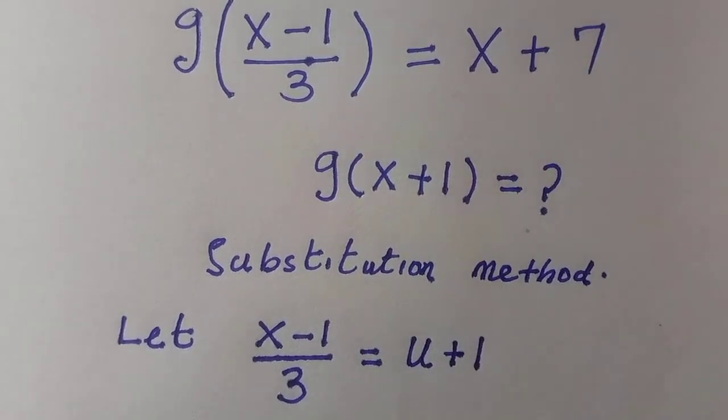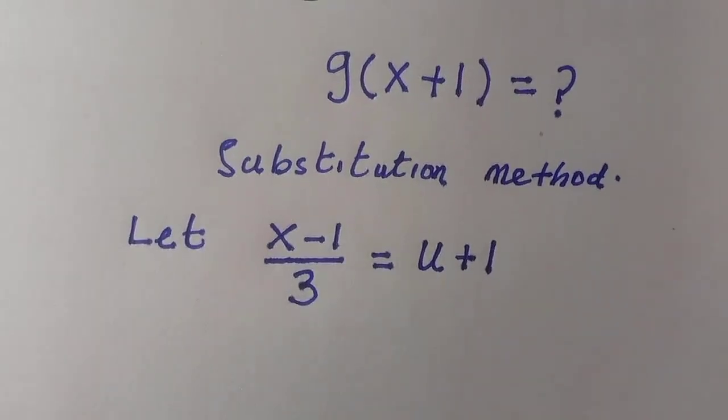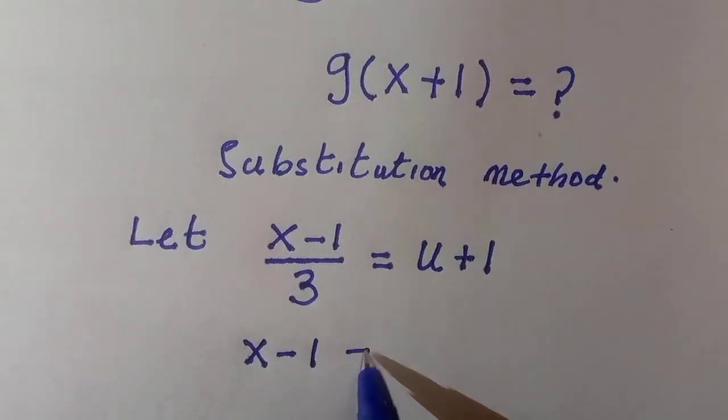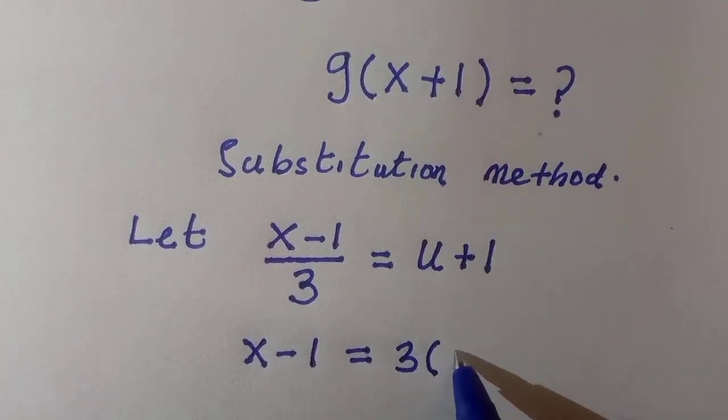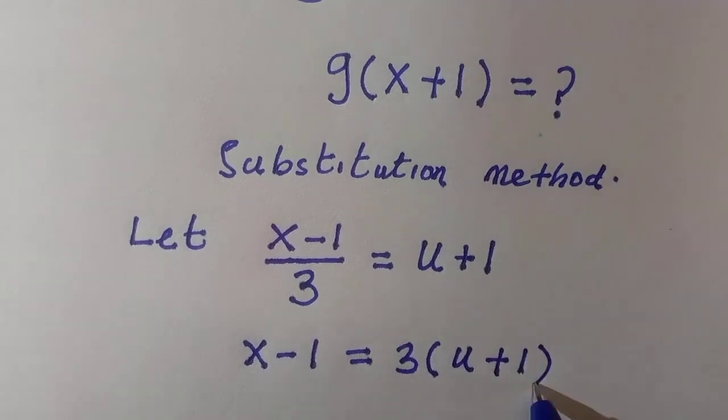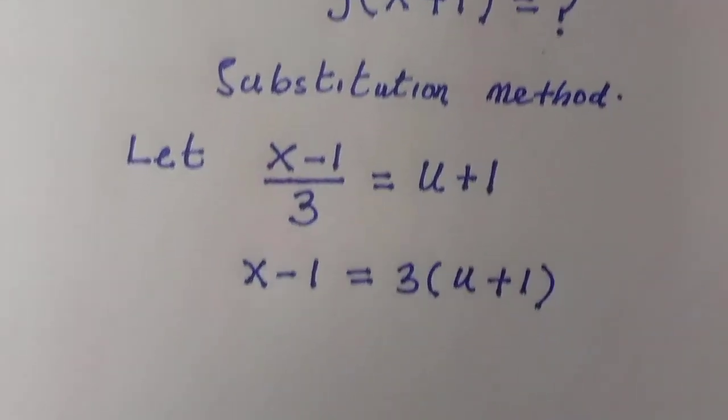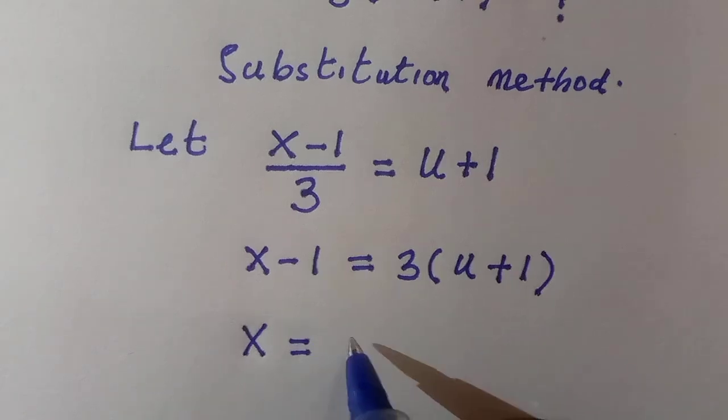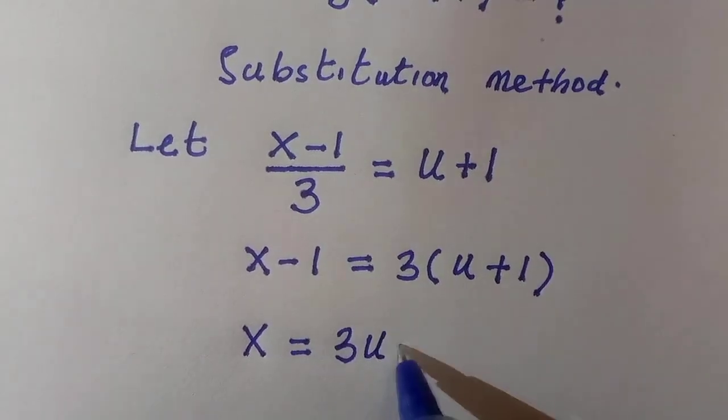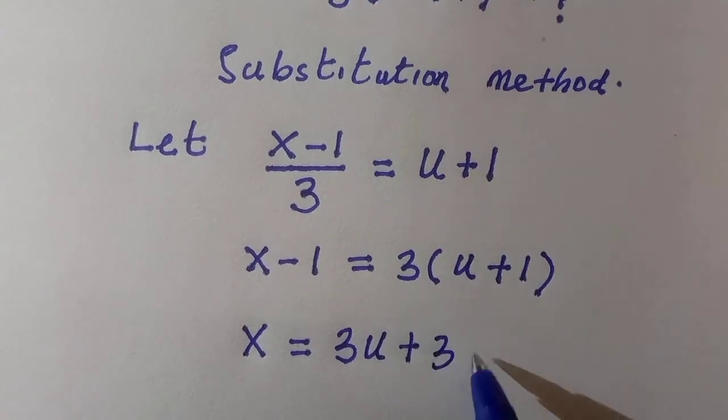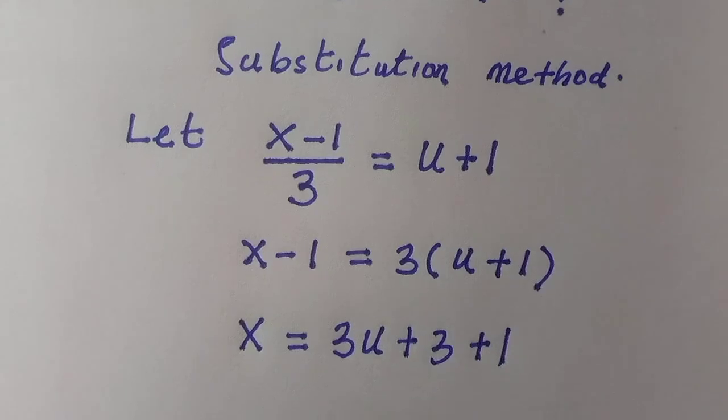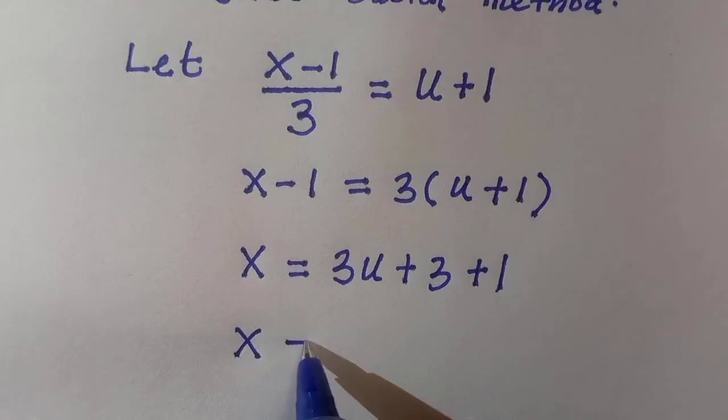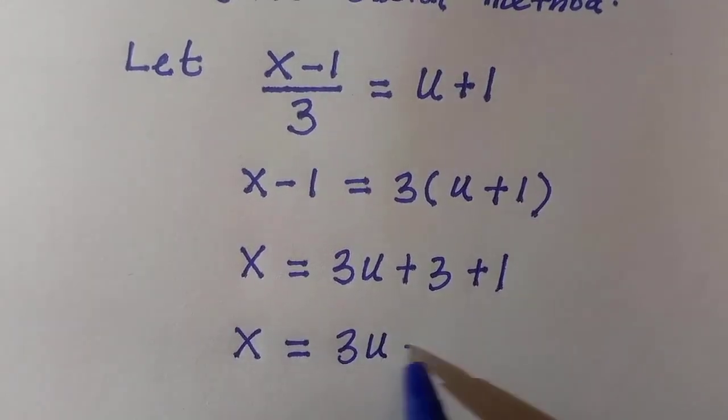We are going to make x the subject of the formula where we have x minus one equals 3(u+1) when we cross multiply. We are going to transfer minus one to the right hand side, and here x equals, when we expand the parenthesis, three u plus three plus one, and we have x equals 3u plus 4.